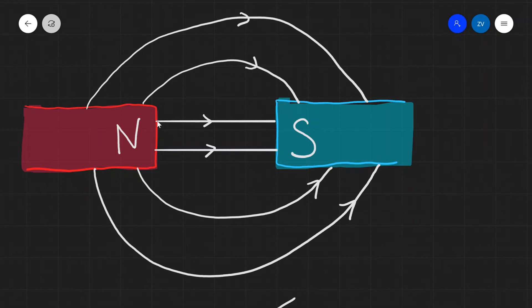The field lines are going from north to south, and around the edges they start to curve like so.